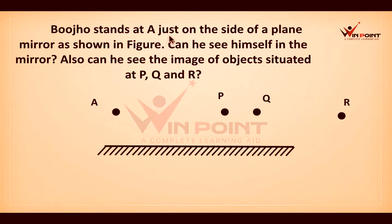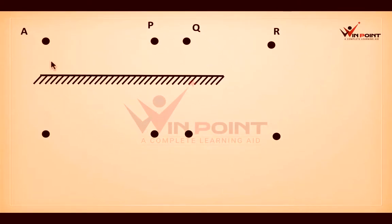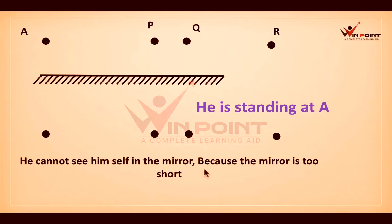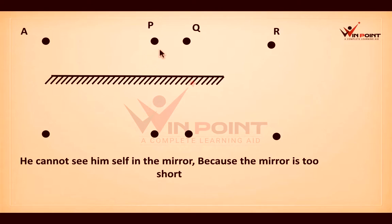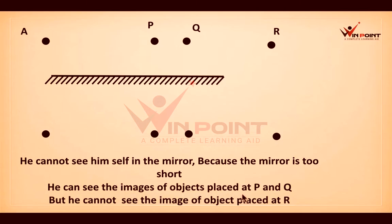Bhujo stands at A, just on the side of a plane mirror as shown in figure. Can he see himself in the mirror? Can he see the images of objects situated at P, Q, R? First we mark the image of A. He cannot see himself in the mirror because the mirror is too short. But if we place an object at P, Bhujo can see that. If we place an object at Q, Bhujo can see that. He can see the images of objects placed at P and Q. But for R, the image is forming outside his field of view — he cannot see the image of the object placed at R.